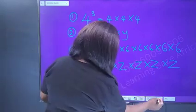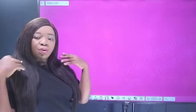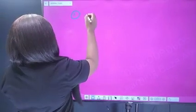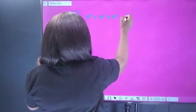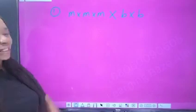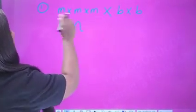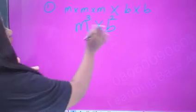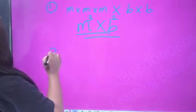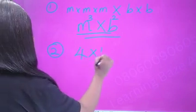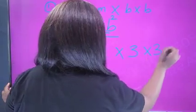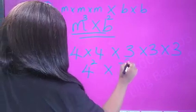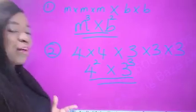Let me give you more examples on writing numbers in index form. If you have m times m times m times m times m times b, that would be written as m raised to power three times b raised to power two. If you also have four times four times four times three times three times three times three, that will be written as four raised to power two times three raised to power three.